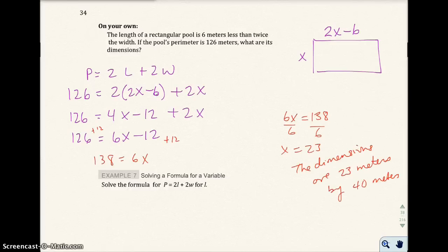Okay, so I hope you tried this on your own, and for a lot of students, the initial setup or translating the problem is the hardest part. The length of a rectangular pool is 6 meters less than twice the width. So again, I draw a little rectangle here, and here's my width, I call x. 6 meters less than twice the width. So here's twice the width, and I need 6 less than that, so I'm going to take away 6 at the end. It's not 6 minus 2x, that would not be correct.